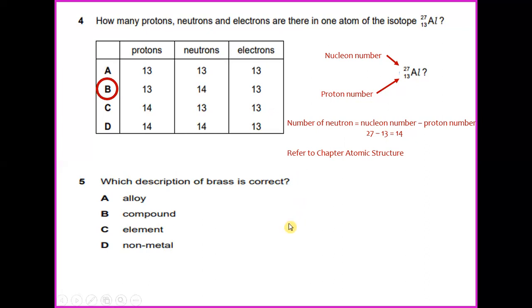Which description of brass is correct? Brass is an alloy of copper and zinc in proportions which can be varied to achieve different colours, electrical and mechanical properties. So the answer would be alloy.